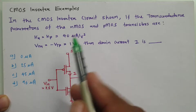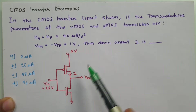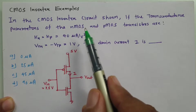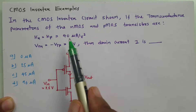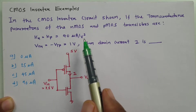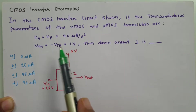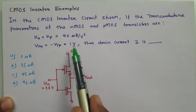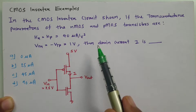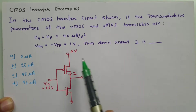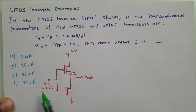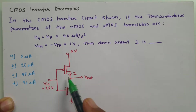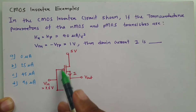In this question, a CMOS inverter circuit is shown. The transconductance parameters of NMOS and PMOS transistors are given as KN and KP equals 40 microampere per volt square, VTN is +1 and VTP is -1. VIN is given as 2.5 volts, and we need to identify the drain current I.